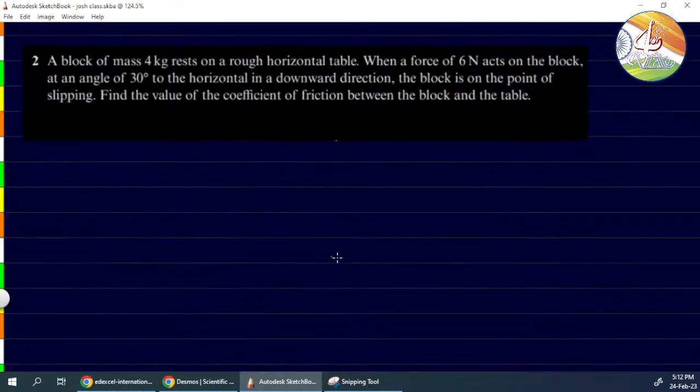A block of mass 4 kg rests on a rough horizontal table. A force of 6 Newtons acts on the block at an angle of 30 degrees to the horizontal in a downward direction. The block is at the point of slipping.